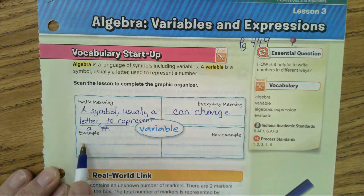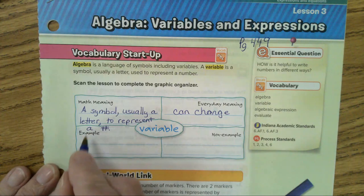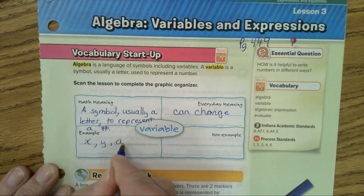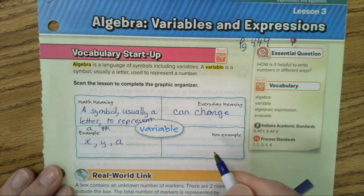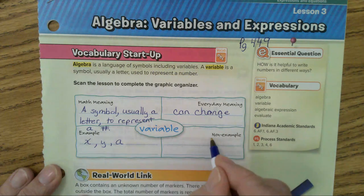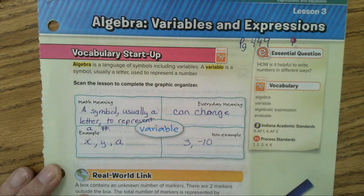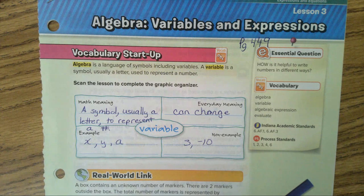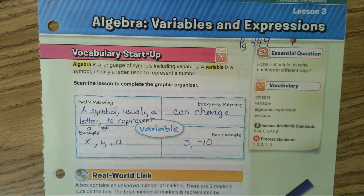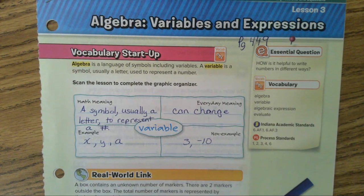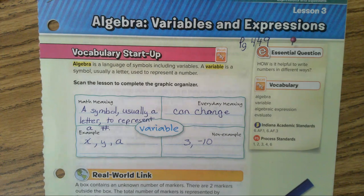What are examples of variables? The most popular one is x, y, a, any letter would be fine. And what are not examples? They're actual numbers. If you had a 3, a negative 10, those are examples of non-variables. They're actual numbers. Okay. We're going to skip the real world link below and go on to page 450.